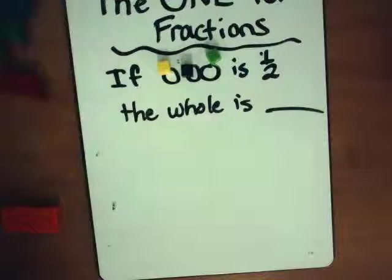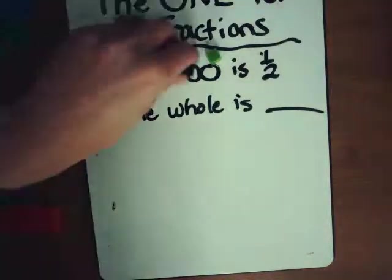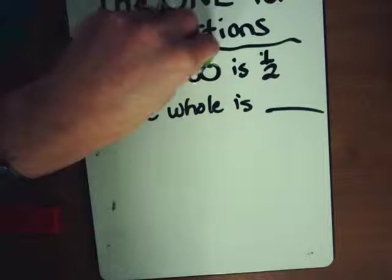Well, how many halves make a whole? Two halves make a whole, right? So one-half is three, two halves is how many? Six. That's right.